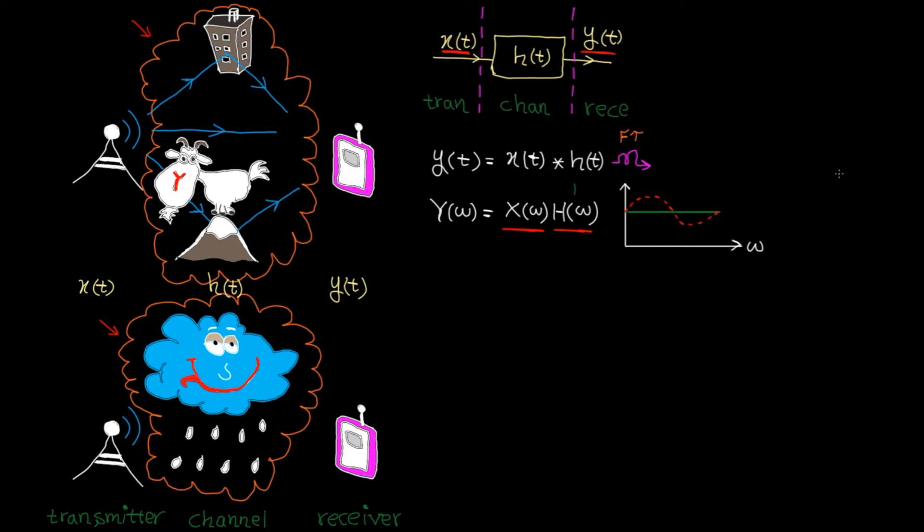Now here is the beauty of equalization. If we can design a system whose frequency response is like this and use it at the receiver, we can get the flat response. Basically, if you multiply the red curve with the blue one, you will get the green line.